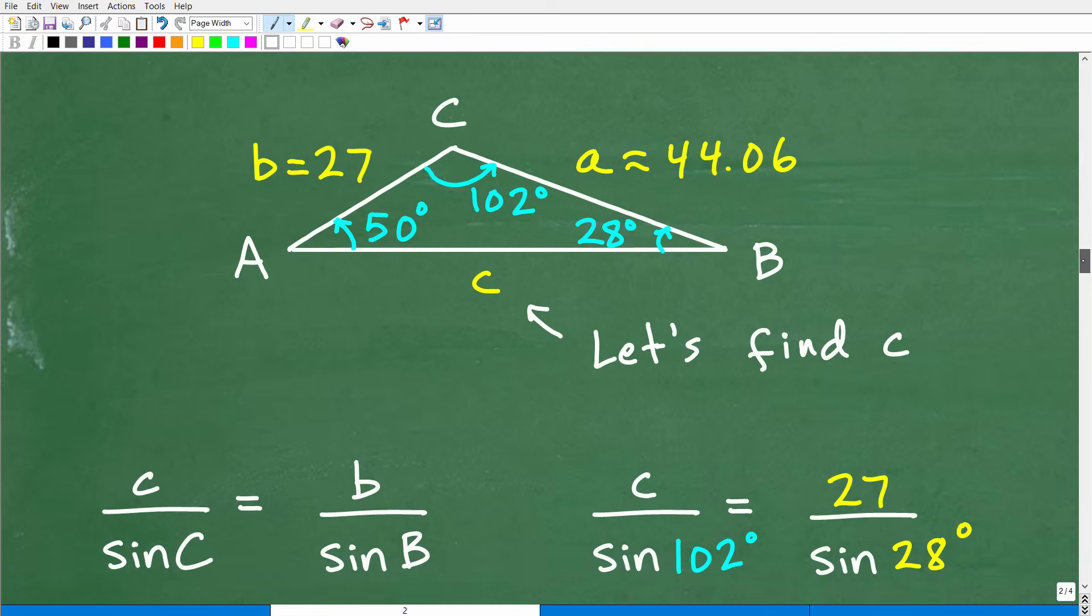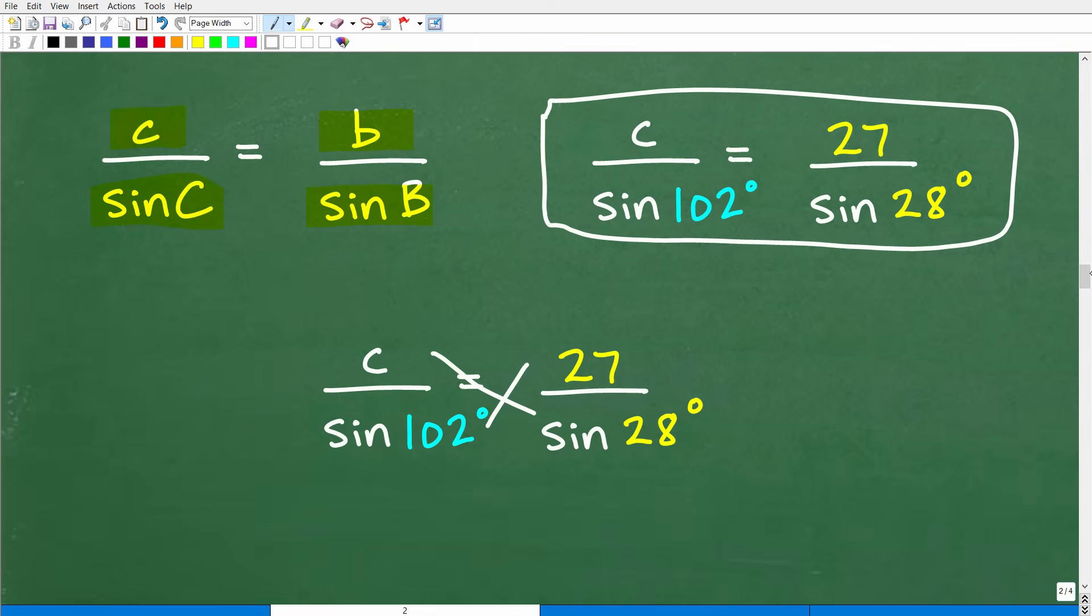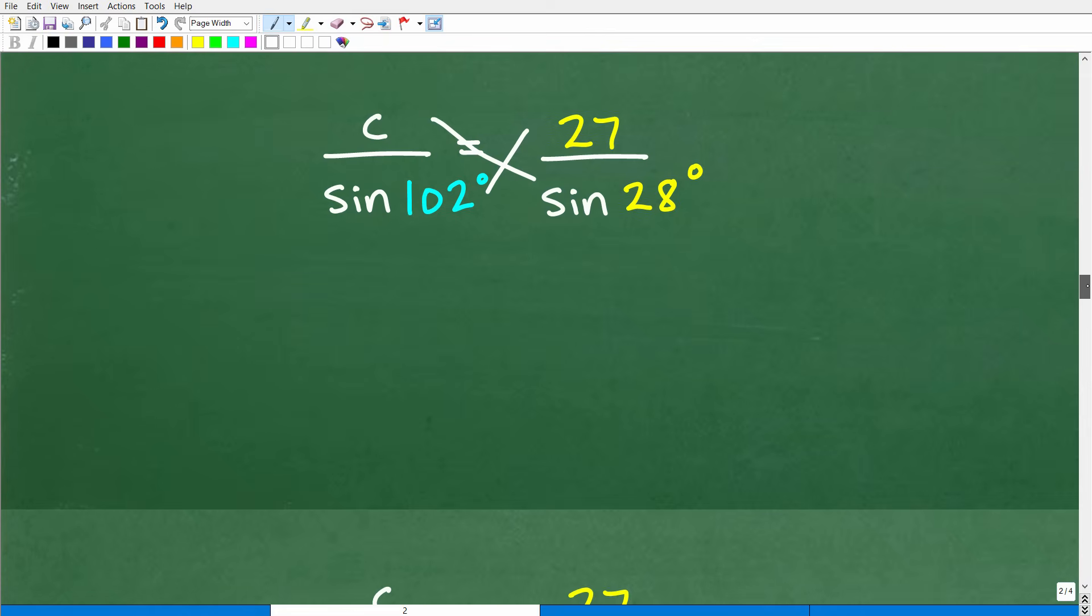All right, so let's find c. Again, we're going to use the law of sines. So c over sine C is equal to b over sine B. All right, so this is how we use the law of sines. Any two angles and sides you can compare A, B, C. It doesn't make a difference. So let's go ahead and do the setup right now. Okay, so c over sine of C, which is 102 degrees, is going to be equal to b, which is 27 over sine of angle B, which is 28 degrees. And again, we're going to use the cross product to solve for c exactly as we did with side a.